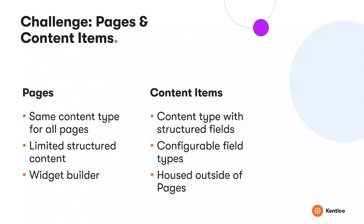The challenges with pages and content items: in Sitefinity, pages are all the exact same content type, which doesn't allow structured content at the page level. Pages are strictly for building with a widget builder. Content items are your structured content types, similar to content items in the Content Hub in XBK. They allow you to create items with structured content and configure field types — HTML, text, checkboxes, and more. The biggest difference between XBK and Sitefinity is that content items are separated from pages; there's no way to view a content item unless you add a content item widget.